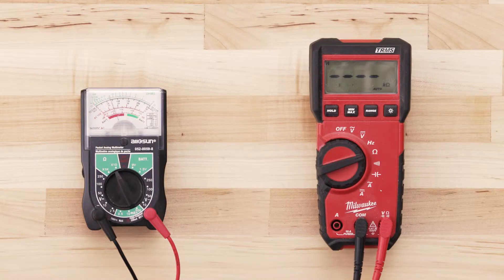If the element has continuity, your multimeter should read anywhere from zero to 50 ohms.